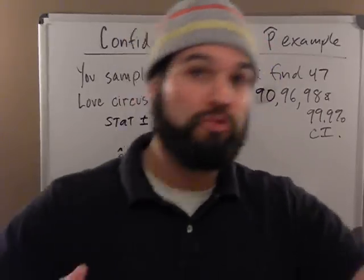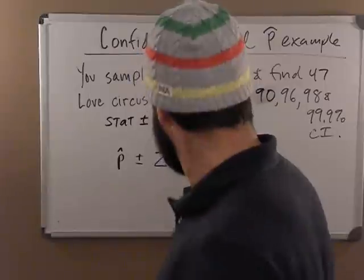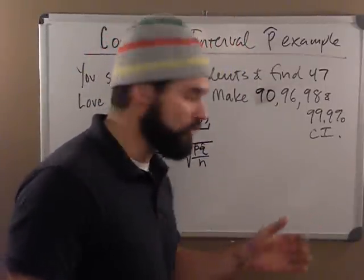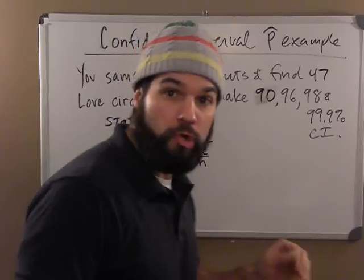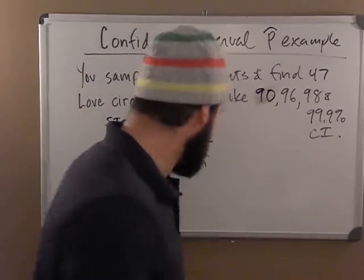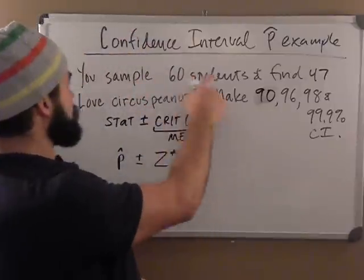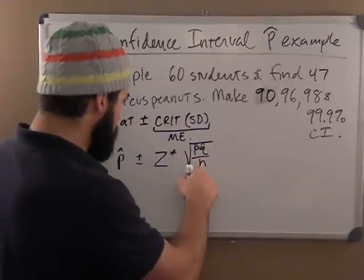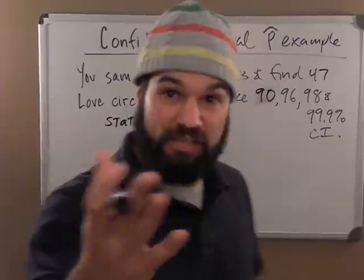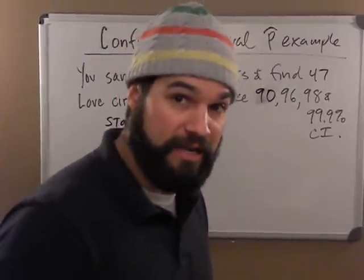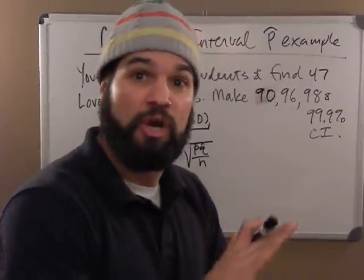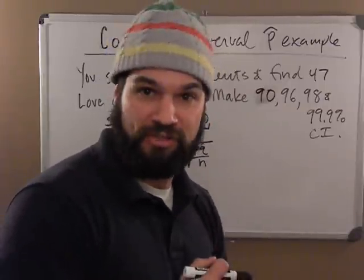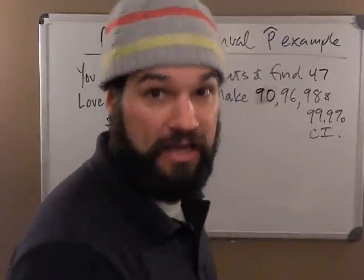The formula is z-crit times the square root of p-hat times q-hat over n. That's my standard deviation - that's given to me too, so all I have to do is plug stuff in. I can get my p-hat from the sample. q-hat is just 1 minus p-hat. n is my sample size - I sampled 60. The z-crit will change for each interval, so let's plug everything in except for the z and then find the z-crits.